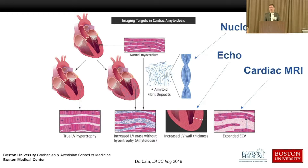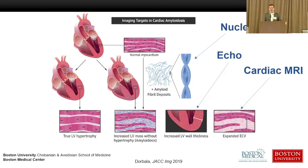We use echocardiography to measure wall thickness. We use cardiac MRI to measure the space in between the cells where the amyloid deposits. And we use nuclear imaging to actually identify what the amyloid binds to in the heart. I'll talk about echocardiography and MRI, and Dr. Wall will talk about the rest.